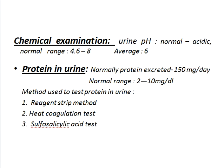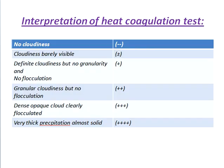Methods used to test protein in urine: Number 1, reagent strip method; Number 2, heat coagulation test; Number 3, sulphosalicylic acid test.